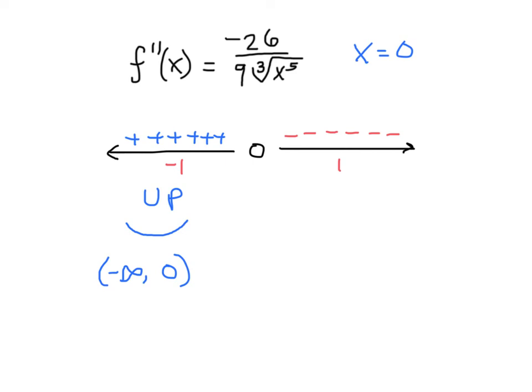Meaning that this side of the function is going to be concave down. And it has a shape kind of like a frown. And that interval is zero to positive infinity.